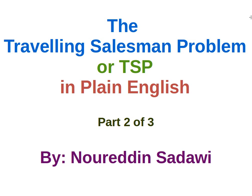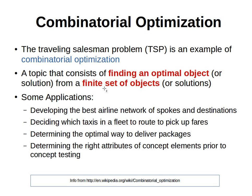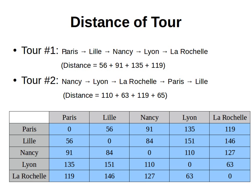Welcome back. We briefly explained what the traveling salesman problem is and spoke about combinatorial optimization — we have a finite set of possible solutions and the idea is to find one solution from those. For example, we can list all possible tours for five cities, compute the distance of each tour, and then choose the tour that gives us the smallest distance.